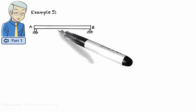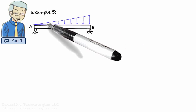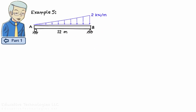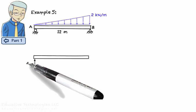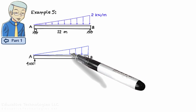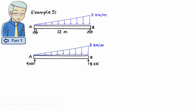Example 5: Here we are given a beam subjected to a triangular load. We wish to determine the shear and moment equations for the beam. From example 2, we know that this beam has a vertical reaction of 4 kN at A and a vertical reaction of 8 kN at B.